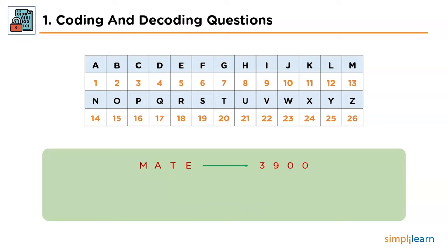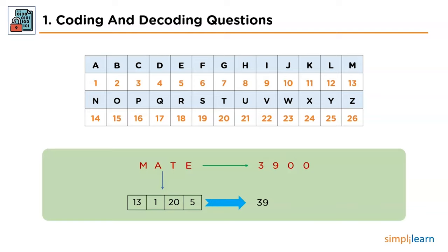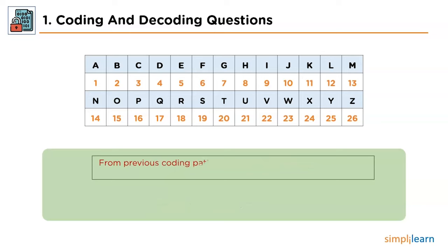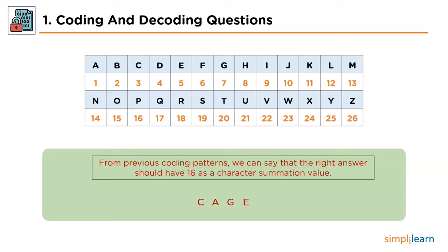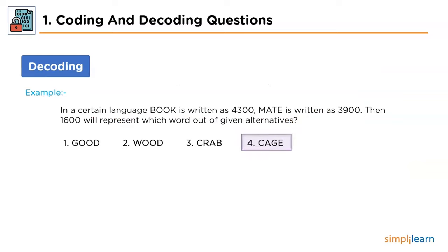The next string is 'mate', encrypted as 3900. Characters M, A, T, E have alphabetical positioning values 13, 1, 20 and 5 respectively. The summation of these values is 39, confirming our logic is correct. From the two coding examples, we can say the right answer should have a character summation value of 16. The only option with a value of 16 is 'cage', which is option 4.